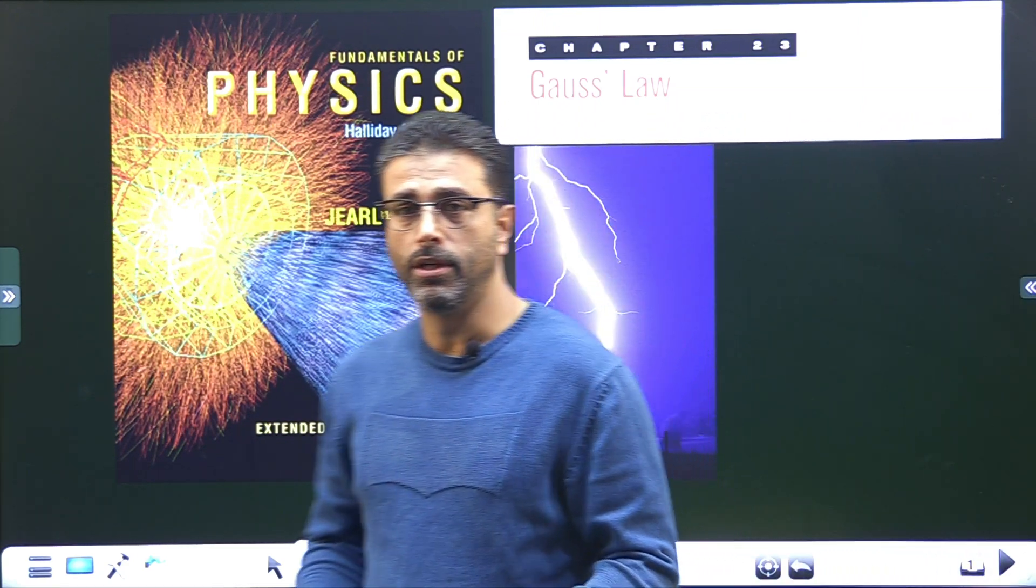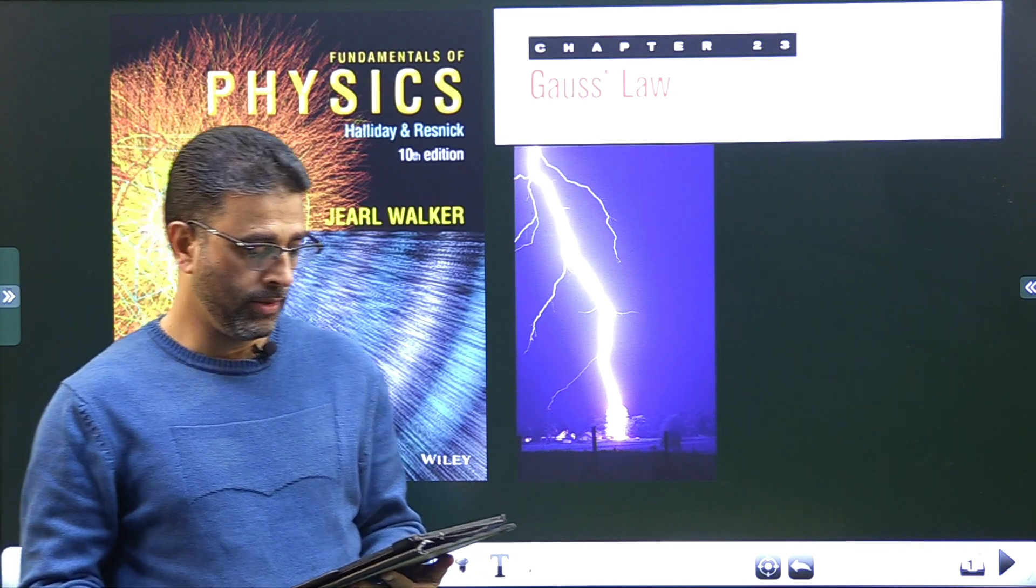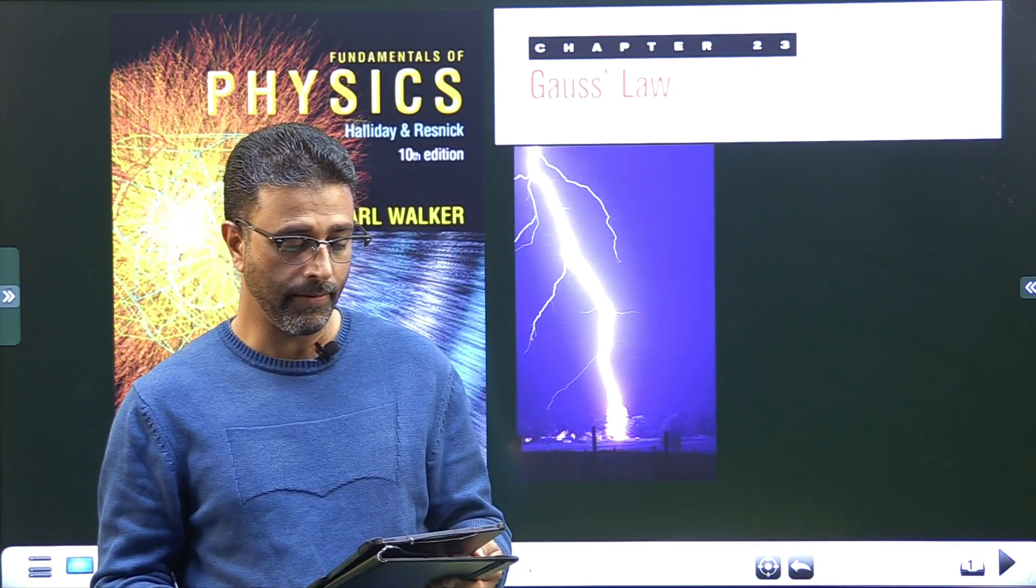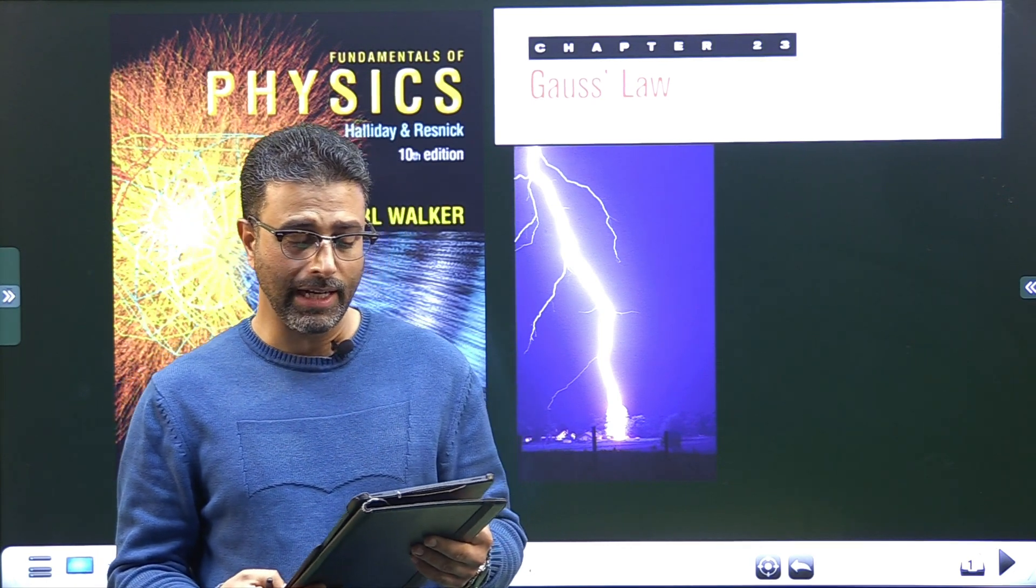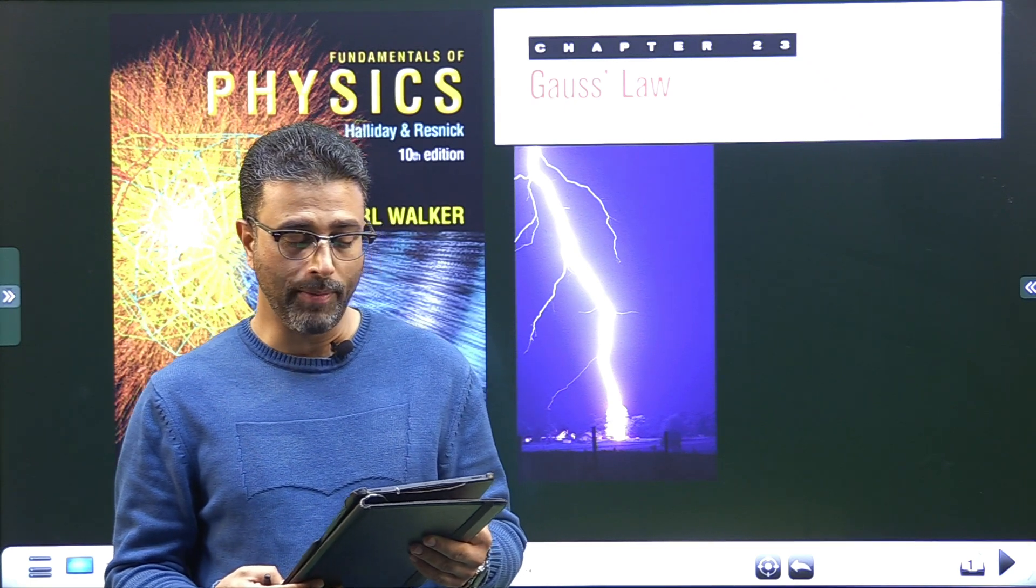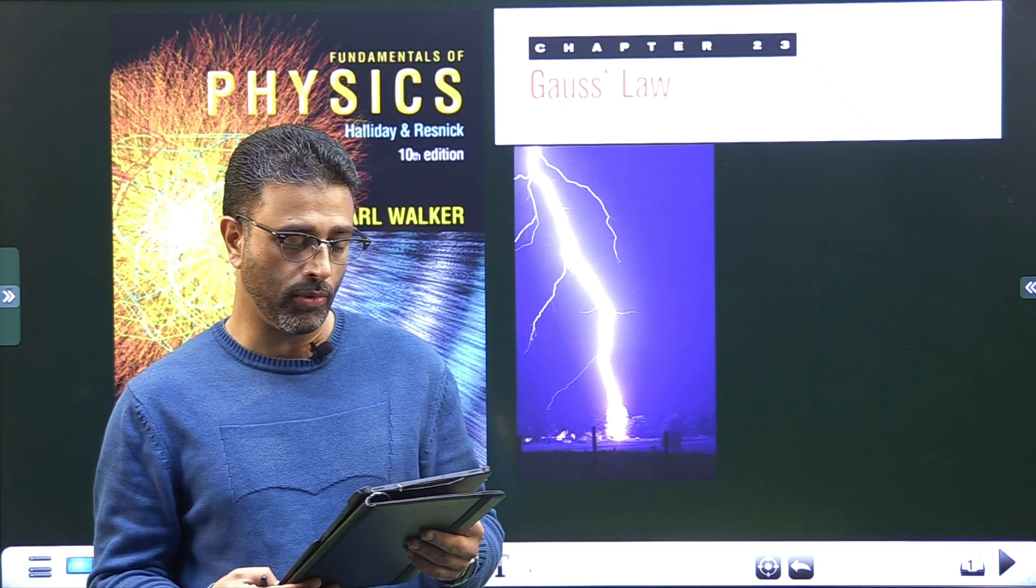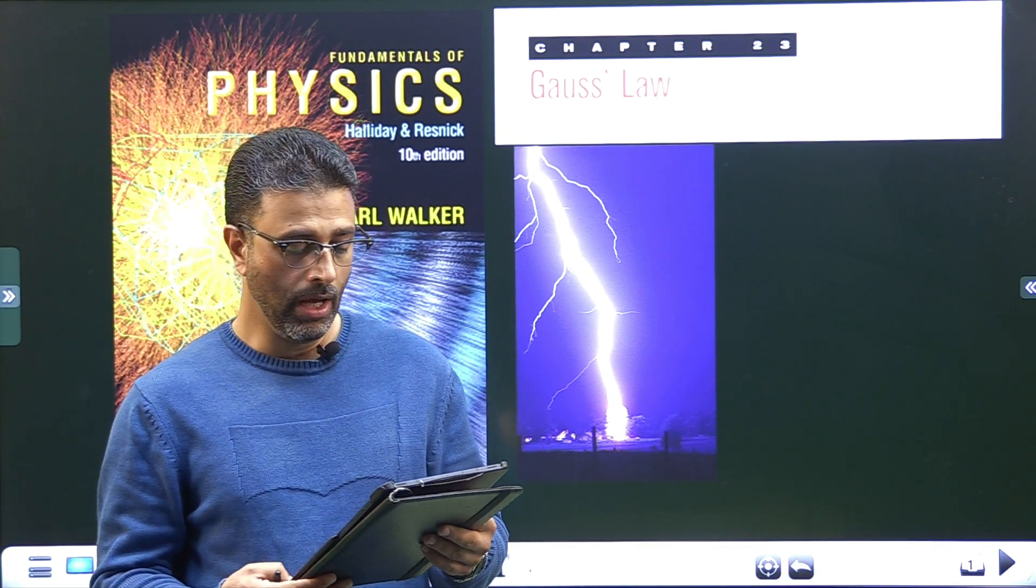Hey guys, assalamu alaikum rahmatullah. Chapter 23, Gauss Law, Problem Number 25, Halliday and Resnick Walker Edition 10. Let me read out the question. An infinite line of charge produces a field of magnitude 4.5 times 10 to the power 4 Newton per coulomb at a distance of 2 meters. Find the linear charge density.